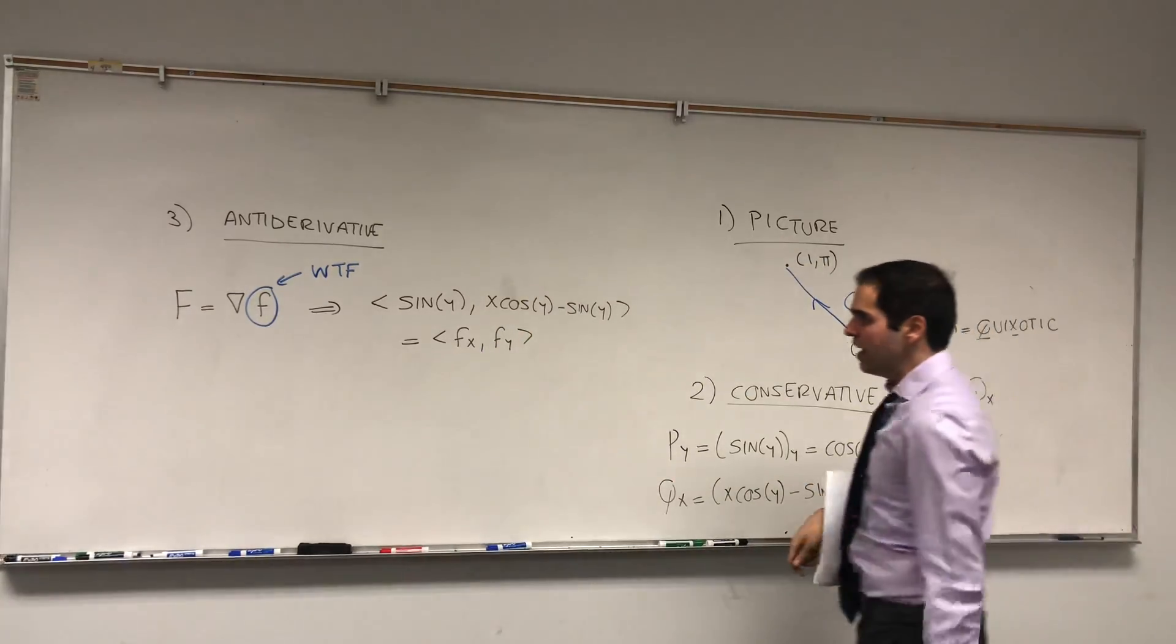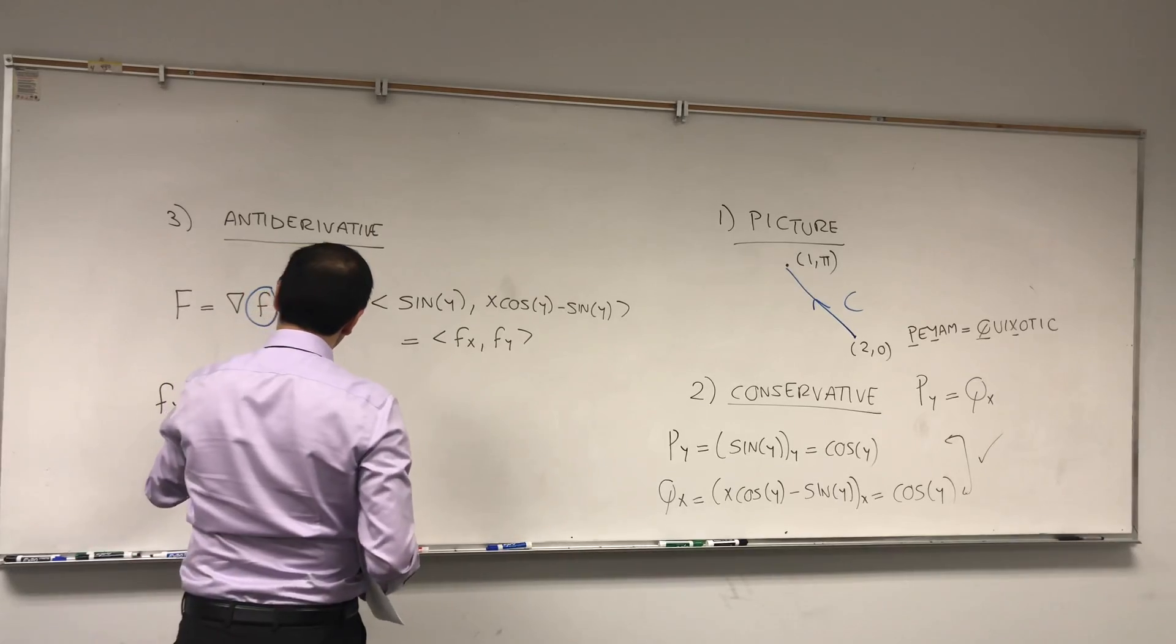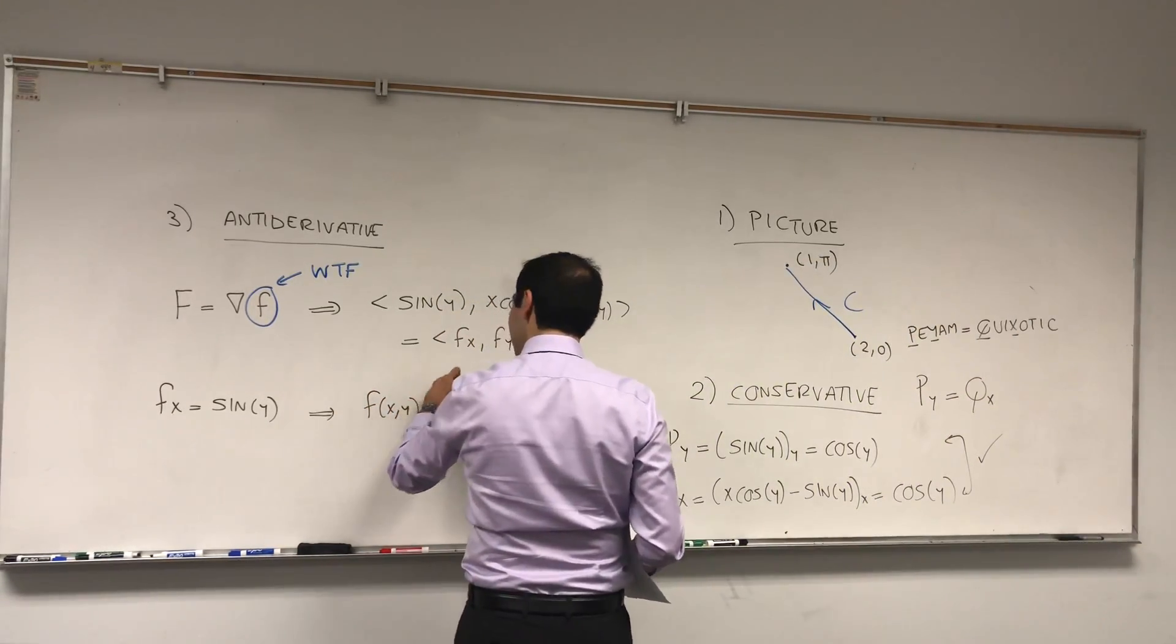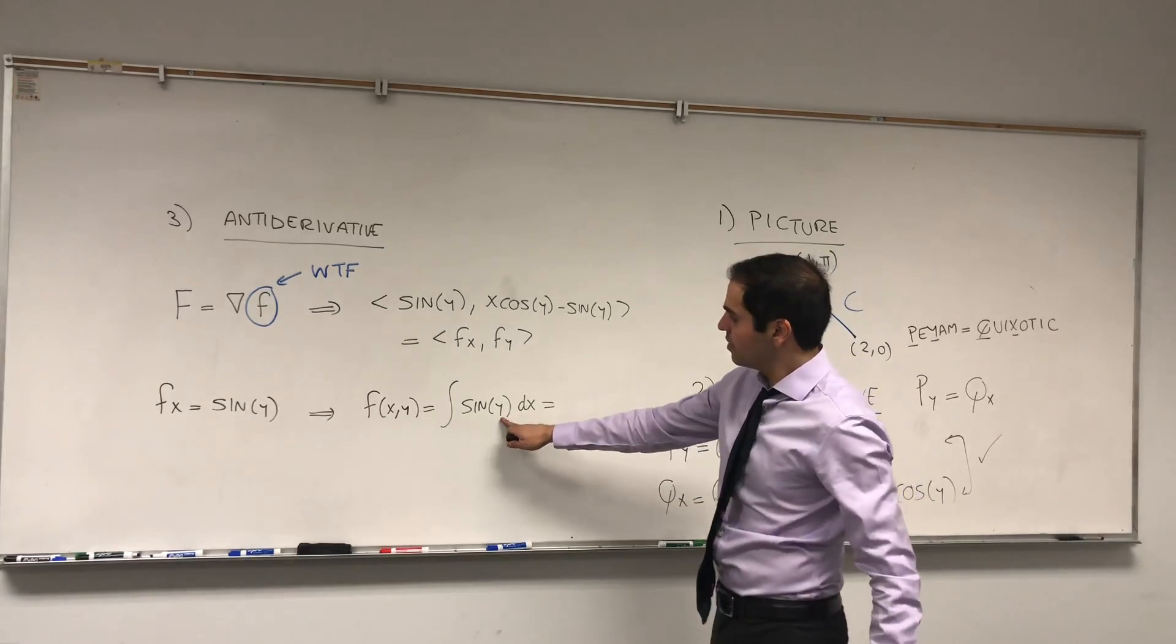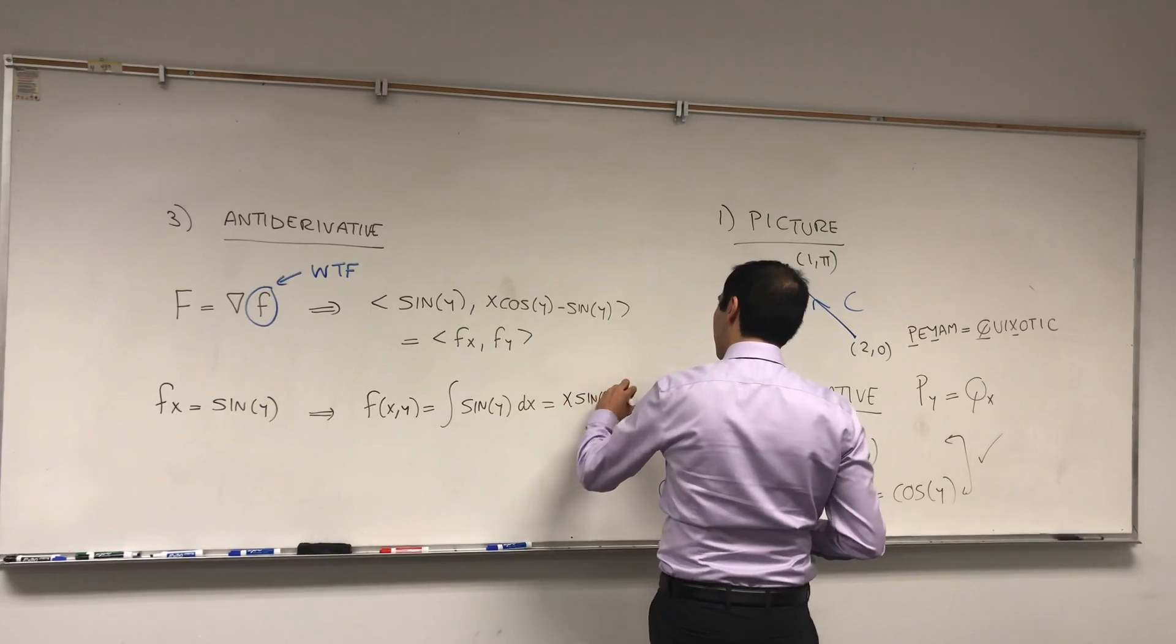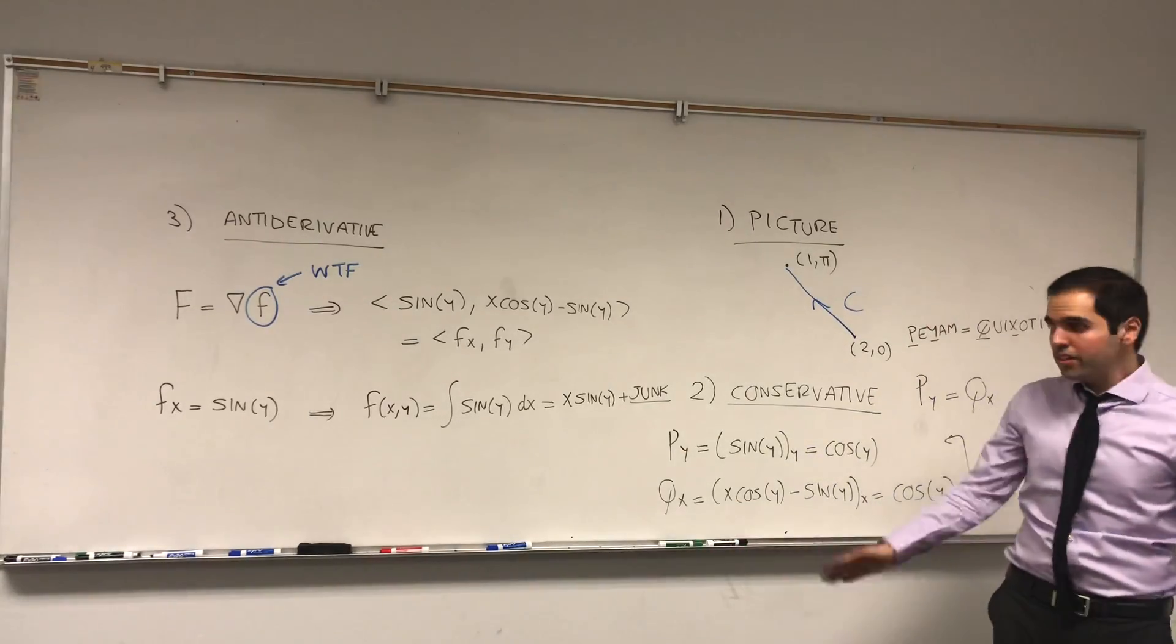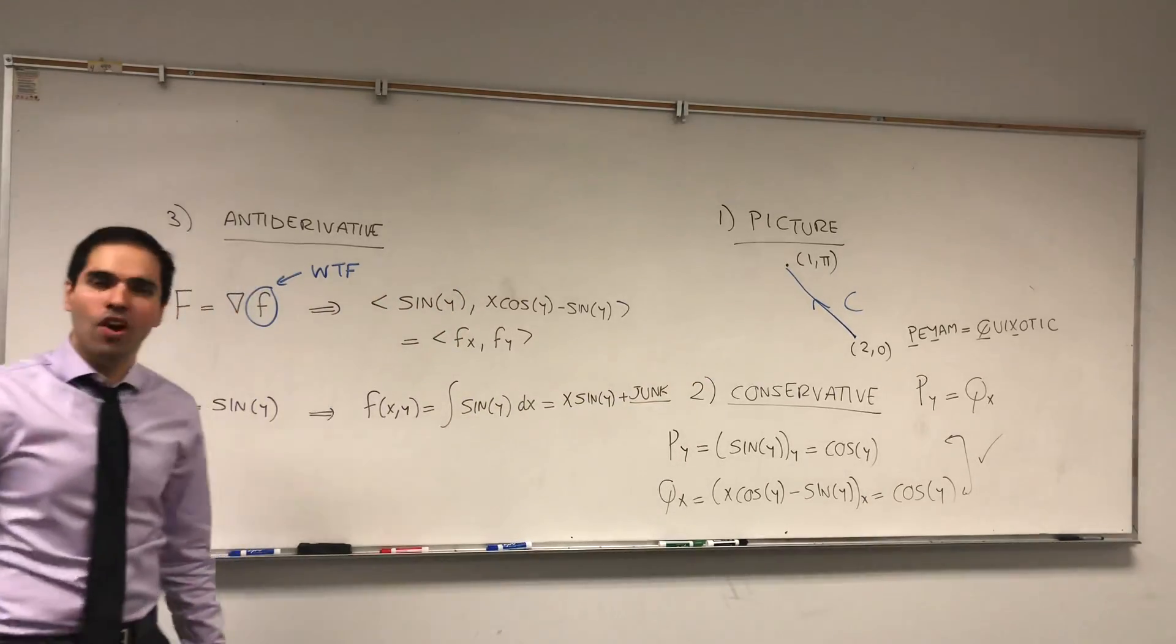What does that mean? On the one hand it means fx = sin(y). So since the x derivative of f is sin(y), f is really the integral of sin(y) with respect to dx. So it means that y doesn't depend on x here, so this is a constant, so it becomes x·sin(y) plus junk—some junk that depends on y, but that doesn't really matter. What matters is f starts with x·sin(y) and possibly has other terms.